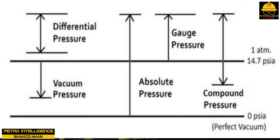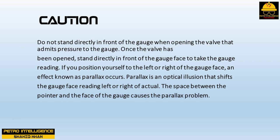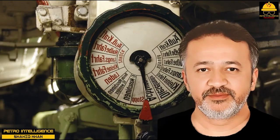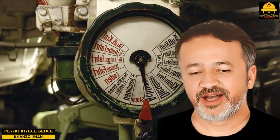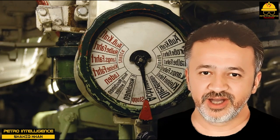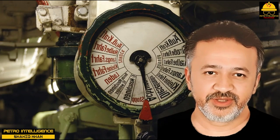To convert from absolute pressure to gauge, subtract 14.7 from the PSIA value. When reading a pressure gauge, do not stand directly in front of the gauge when opening the valve; once the valve is open, stand directly in front of the gauge face to take the reading. If you position yourself to the left or right of the gauge face, parallax occurs — an optical illusion that shifts the gauge face reading left or right of actual, caused by the space between the pointer and the face of the gauge. A PSIG gauge cannot be used with processes that operate under vacuum, as negative pressures cause the primary elements to contract beyond design limits.